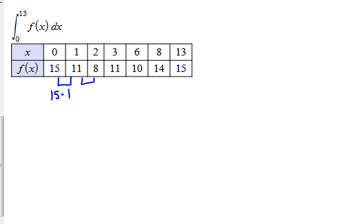So, our next one, from 1 to 2, you use the y value from the left side, 11. It's another width of 1. 2 to 3, we use the y value of the left side of the interval, so 8, its width is 1. 3 to 6, its y value is 11, it has a width of 3. 6 to 8, its y value of the left side, 10, width of 2, 8 to 13, y value of the left side, 14, 8 to 13 is a width of 5.